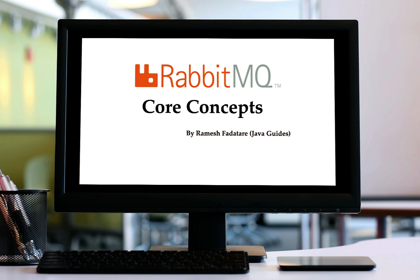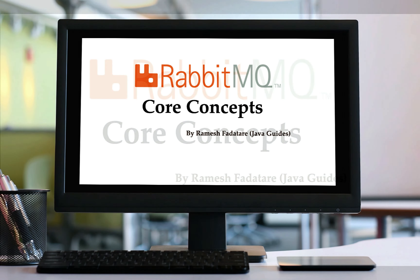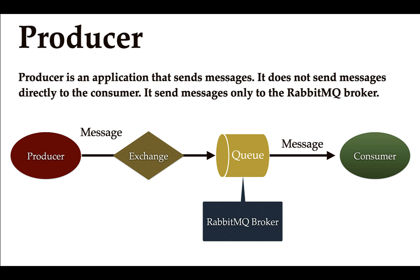In this lecture we'll look at RabbitMQ core concepts. A producer is an application that sends a message. It does not send a message directly to the consumer — it sends a message only to the RabbitMQ broker. We'll understand exchange and queue later; for now just understand that the producer sends messages to the RabbitMQ broker.